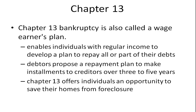Chapter 13 is another well-known term, sometimes referred to as a wage earner's plan. Chapters 7 and 13 deal with individuals. Chapter 13 enables individuals with regular income to develop a plan to repay all or part of their debts. Debtors propose a repayment plan to make installments to creditors over three to five years. One reason homeowners may choose Chapter 13 over Chapter 7 is that it offers individuals an opportunity to save their homes from foreclosure. Banks and other financial institutions don't really want to take over someone's home — they want a plan to get back some of their money, and Chapter 13 may be a better choice.